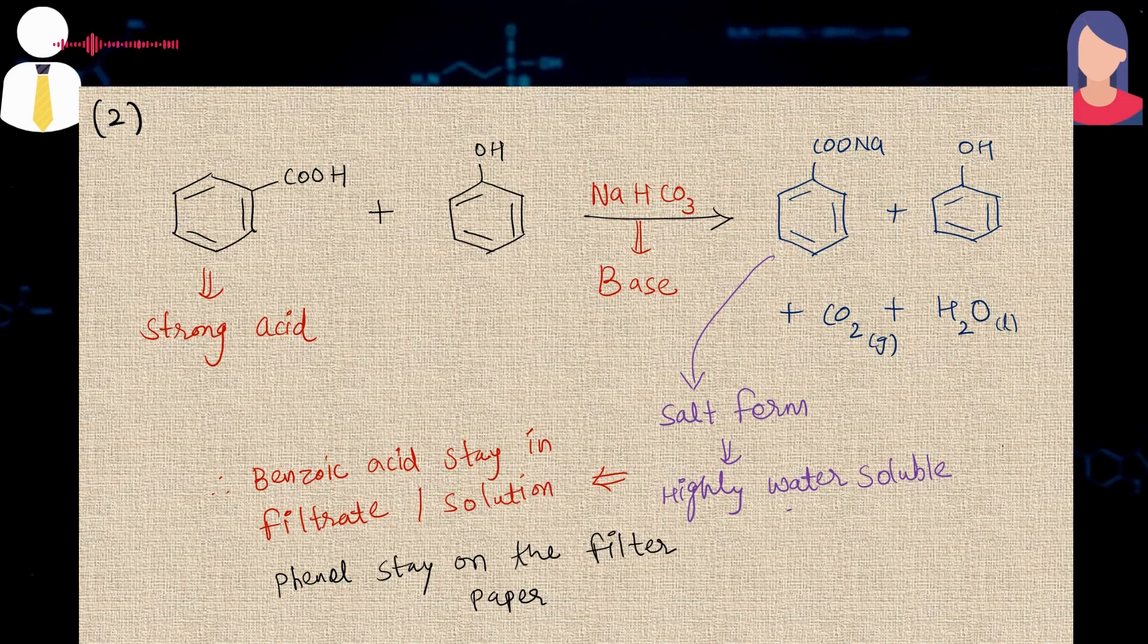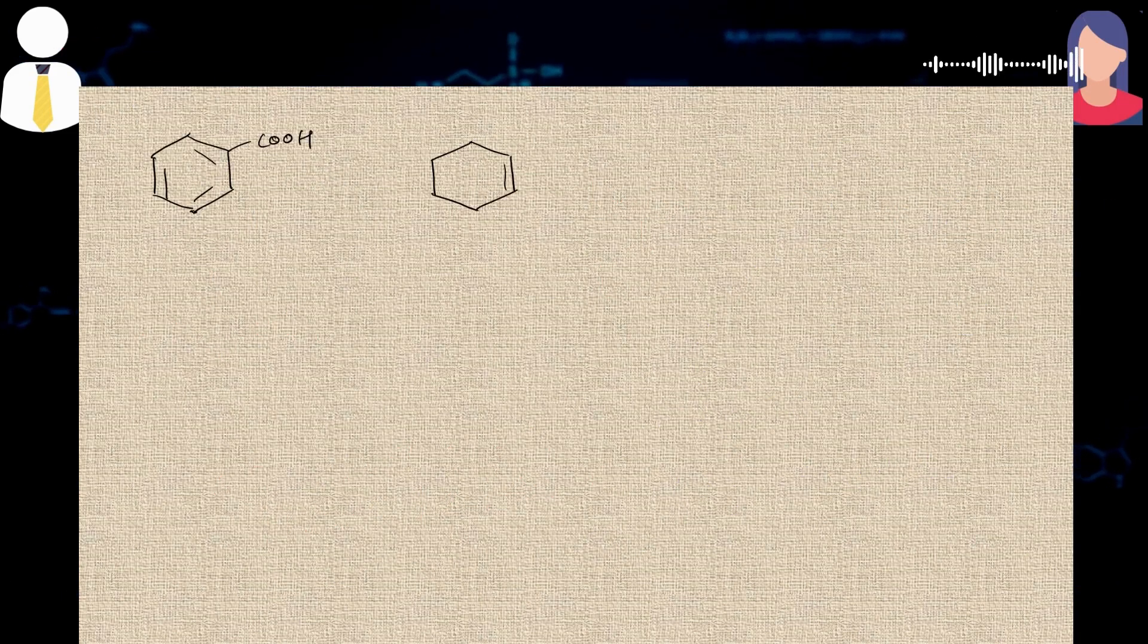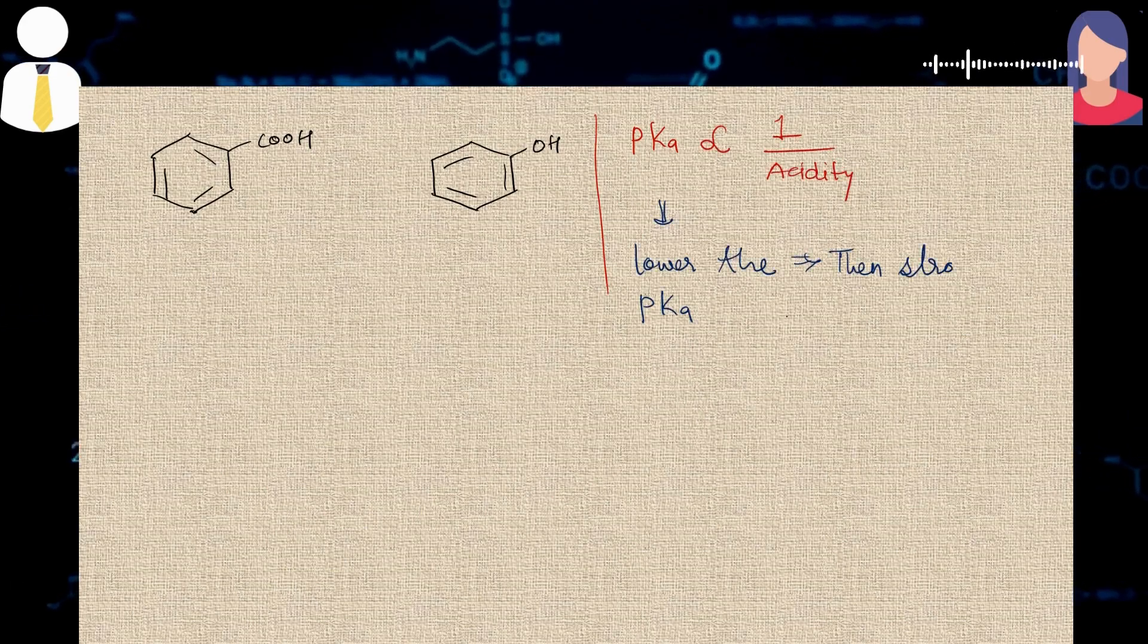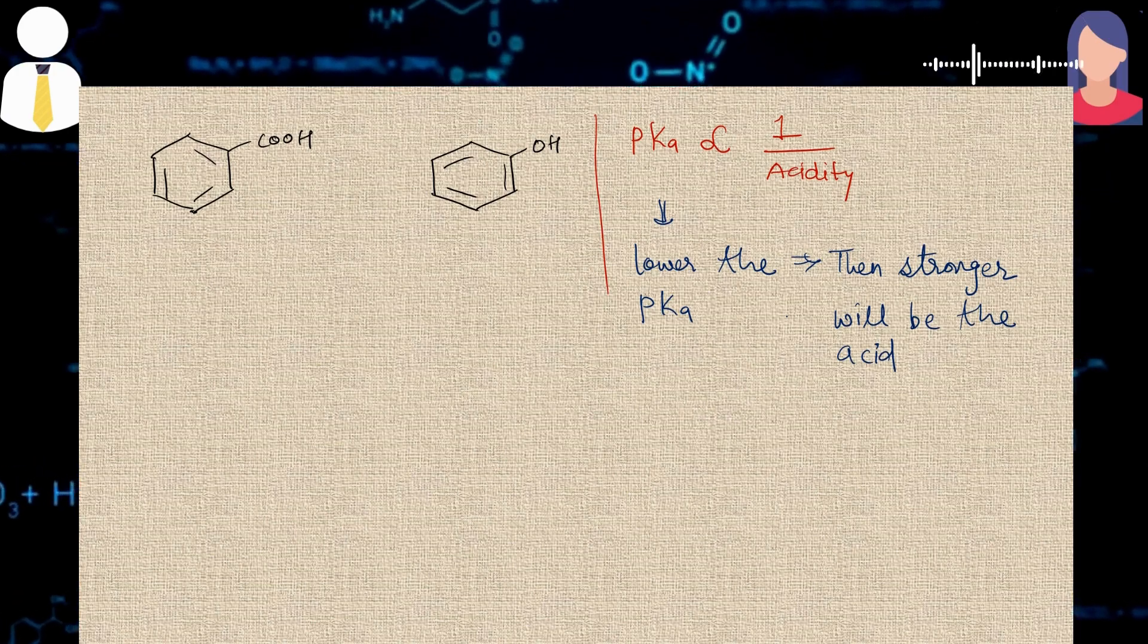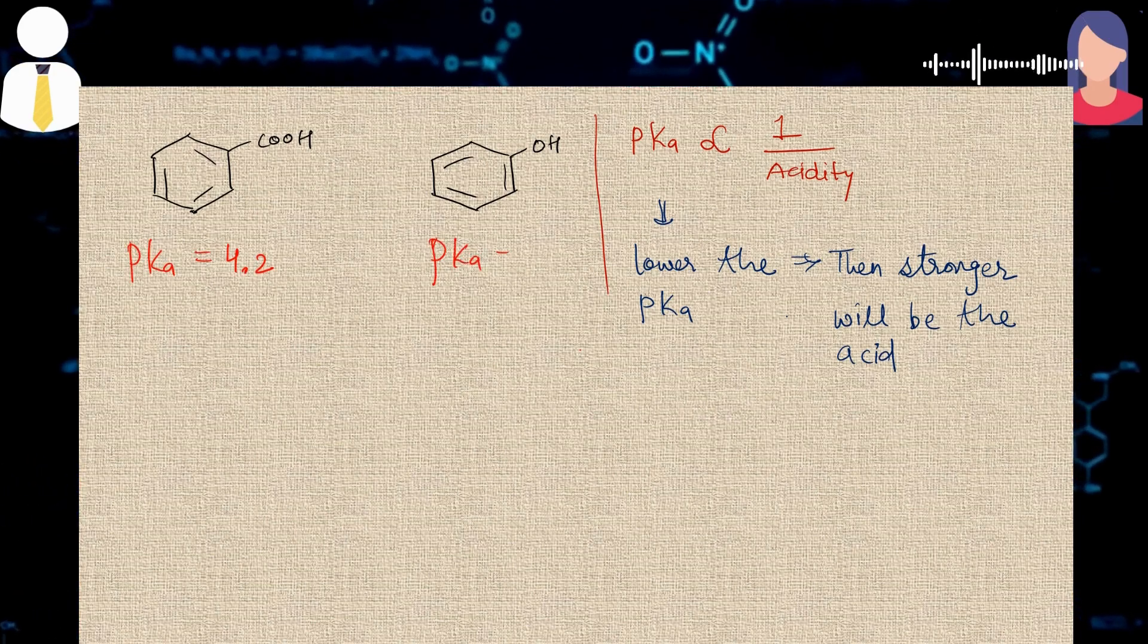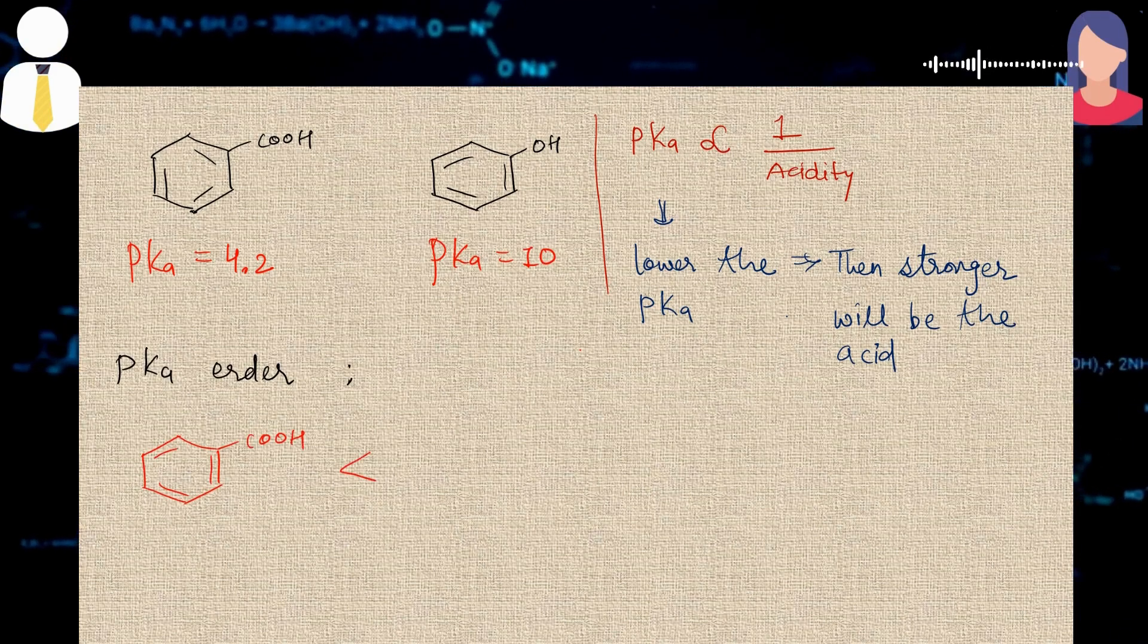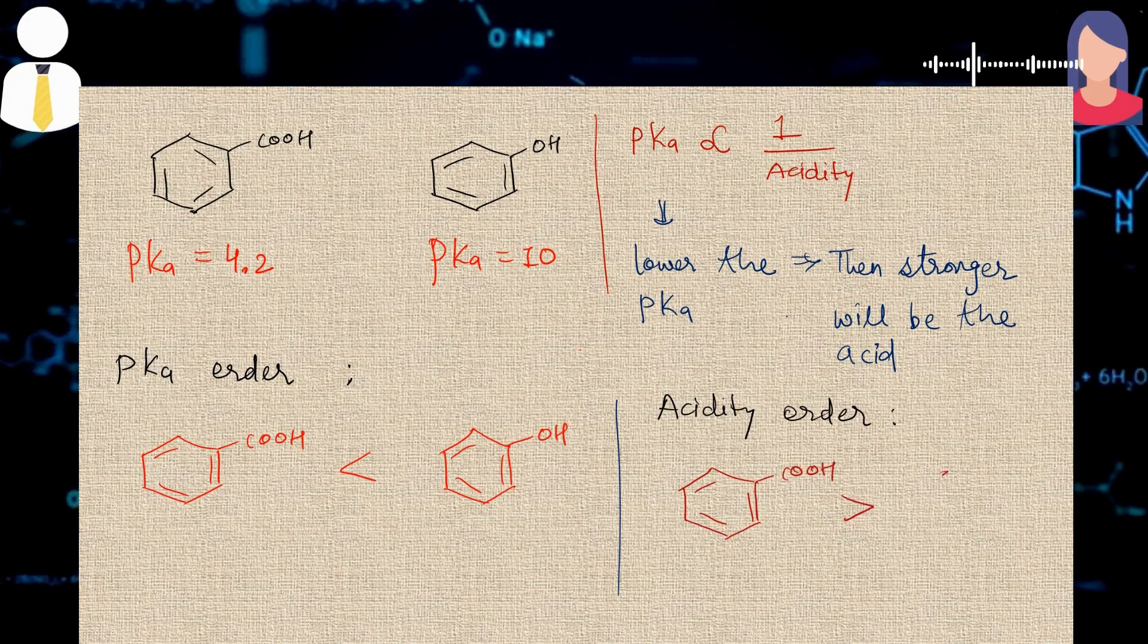But on what basis you are saying that benzoic acid is a stronger acid than the phenol. I said on the basis of its pKa values. pKa values are related to acidity of any compound. So if any compound has small pKa value, then that compound is said to be more acidic. Now it is experimentally proven that benzoic acid and phenol have pKa values around 4.2 and 10 respectively. So benzoic acid has pKa value much lower than the phenol, so it is highly acidic. And that's why it reacts with sodium bicarbonate.